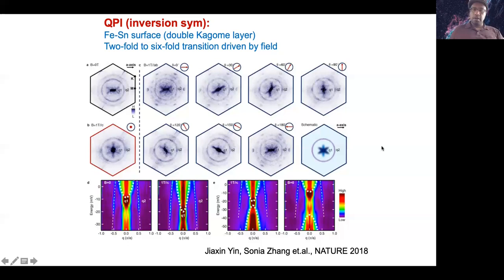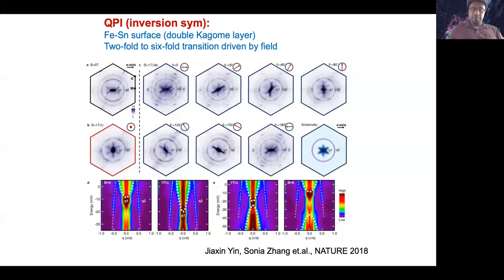Finding an electronically nematic system is not new in condensed matter. But what is new here is finding a system where you can control the nematic axis with an external magnetic field — the first example of a nematic system that you can control with a magnetic field. We were searching for Chern gap and kagome physics, but found additional many-body effects.